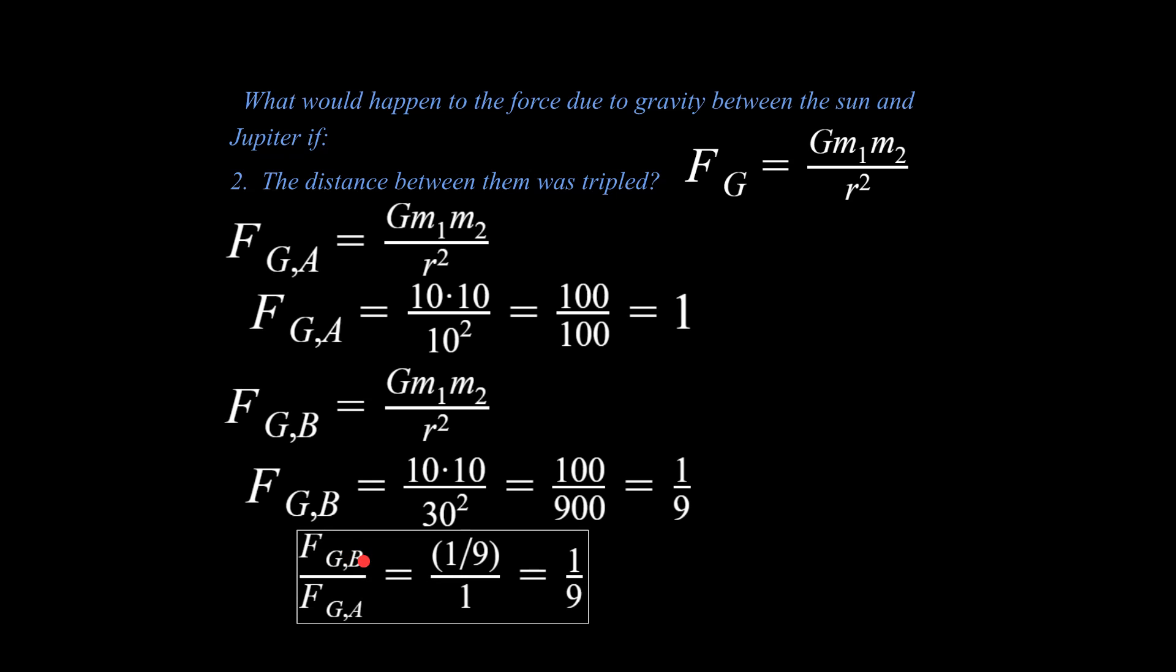That means if we compare the second example with respect to the first, we write what we had for a relative value for the second example over what we had for the first example, and that translates to one ninth. What does that mean? That means the force due to gravity between the sun, if you were somehow able to move them so they were three times as far apart as they were before, the attractive force between them of gravity would be one ninth as great.